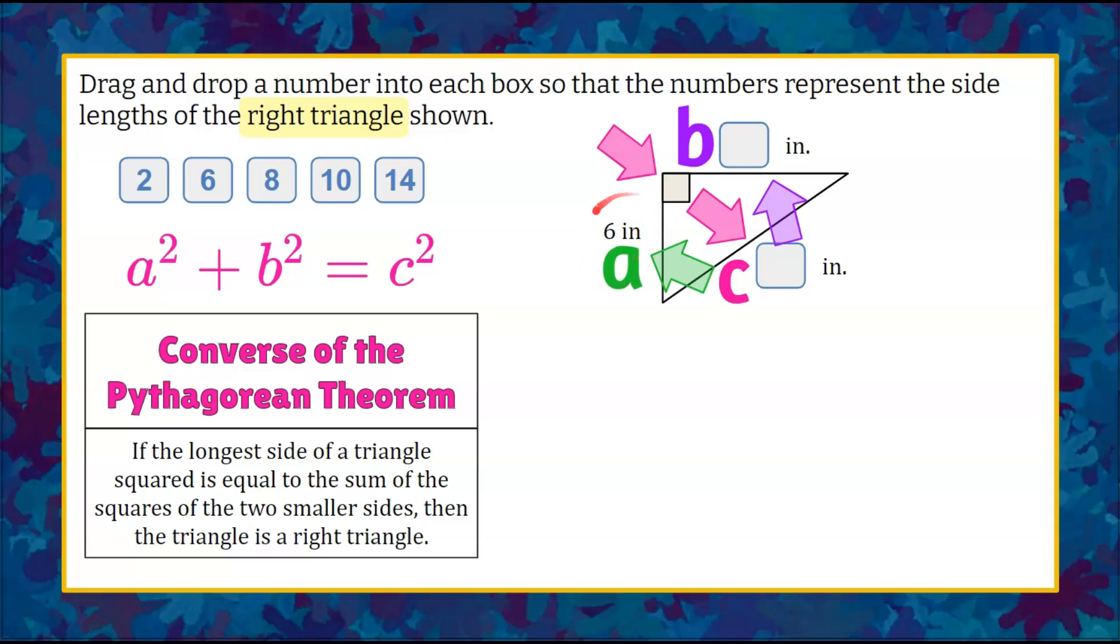So when I look at the fact that we've been given one of the legs, I know that my hypotenuse C must be greater than this value. So we know that it cannot be 2 or 6. It has to be greater than 6. So we're going to consider 8, 10, or 14 as our hypotenuse.